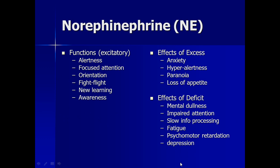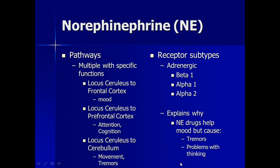Norepinephrine is the next neurotransmitter. The first thing to bear in mind is that it is found peripherally within both the sympathetic nervous system and also the brain. Norepinephrine has a variety of receptors to which it can bind — the receptor subtypes are beta and alpha. Beta receptors are usually inhibitory and alpha receptors are usually excitatory, which means norepinephrine can be excitatory or inhibitory based on the receptor subtype. The pathways of norepinephrine all originate from the locus coeruleus, also called the blue center of the brain, and norepinephrine is definitely implicated in depression.